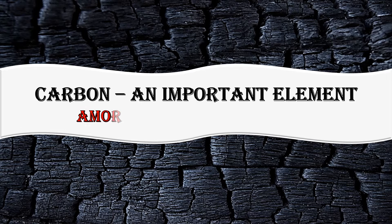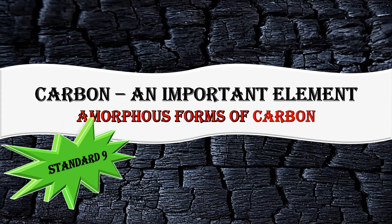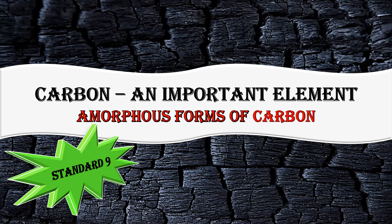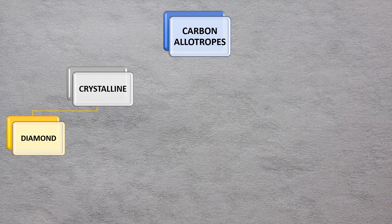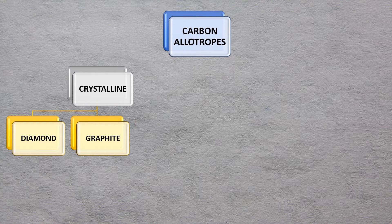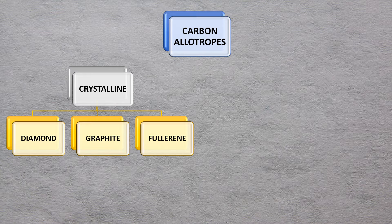Hello and welcome to another lesson in science called 'Carbon: An Important Element,' where we will be doing the amorphous forms of carbon. Carbon allotropes — allotropes are elements which exist in more than one form, with the same chemical properties but differing physical states. Carbon has two types of allotropes: the crystalline ones — diamond, graphite, and fullerene.